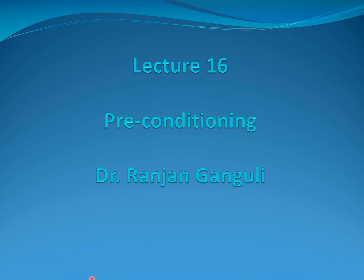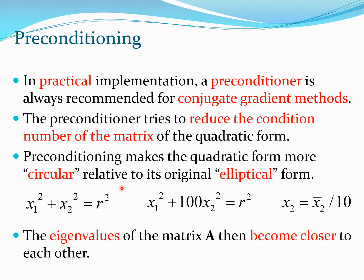Today's lecture introduces a new topic called preconditioning, which is essentially a process of scaling the design variables of a problem so that the conjugate gradient method works very well. In fact, most methods of optimization and numerical methods in general will benefit from preconditioning. In practical implementations, a preconditioner is always recommended for conjugate gradient methods, and its objective is to reduce the condition number of the matrix of the quadratic form.